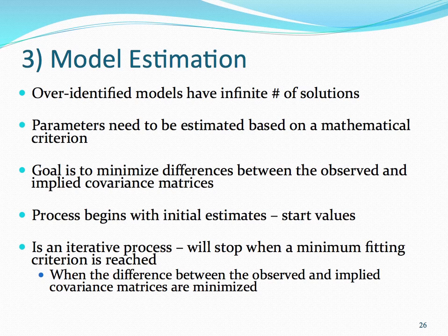With the model estimation process, it begins with initial estimates that are imputed within the computer program — these are called start values. The estimation process is called an iterative process, and it will stop when a minimum fitting criterion is reached. Specifically, this means it will stop when the difference between the observed and the implied covariance matrices are minimized.